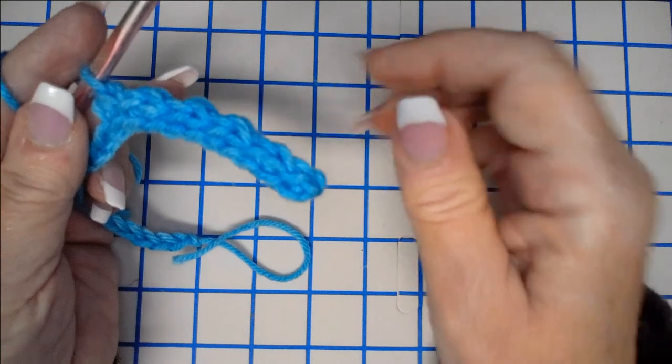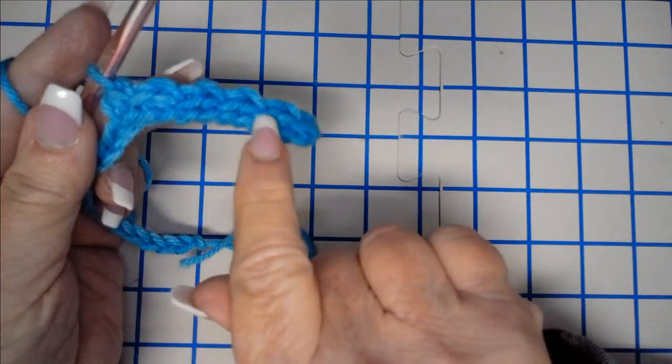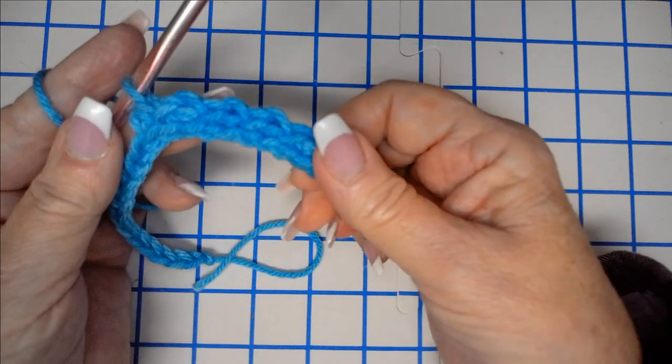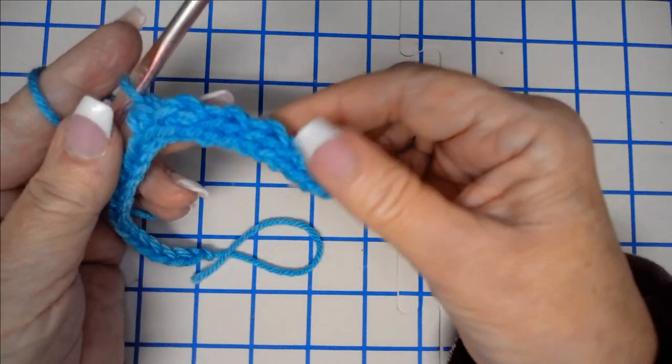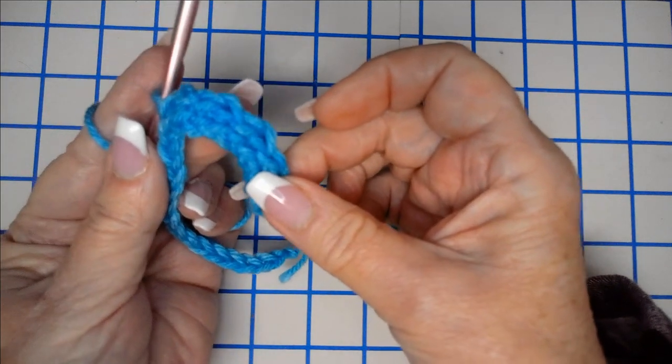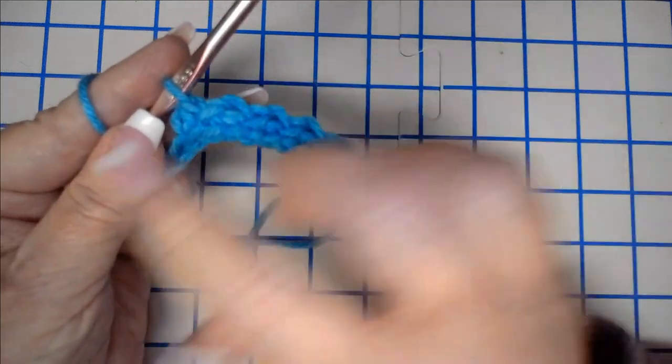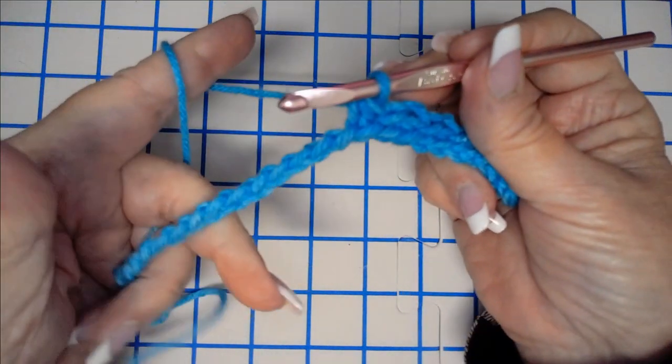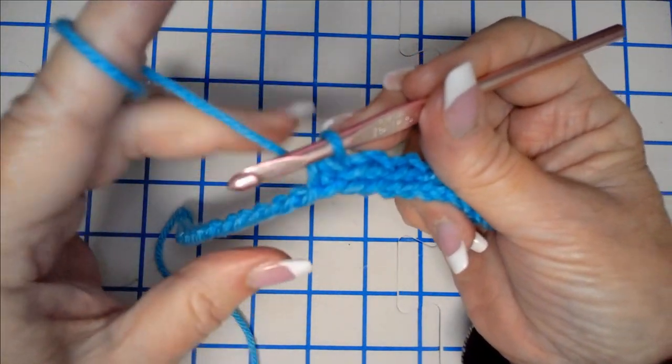Now, before I leave you here just a minute, see how this is starting to curve? That's okay. It's going to do that, because these are small stitches, and they're following one right after another. So it is going to kind of want to curve, but here in a couple of rows, it'll start straightening itself out, and you'll be just fine. So I'll meet you down here at the end of the row in just a minute.